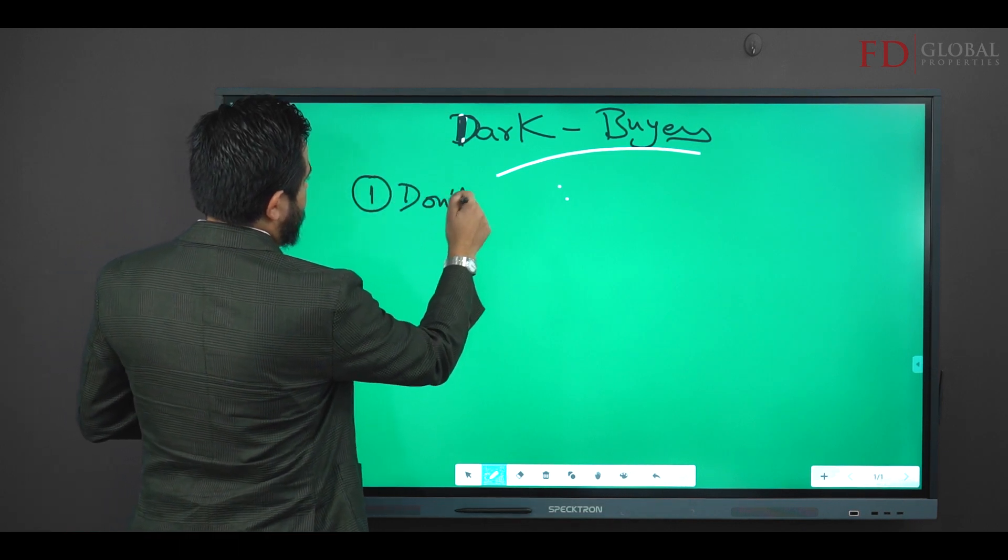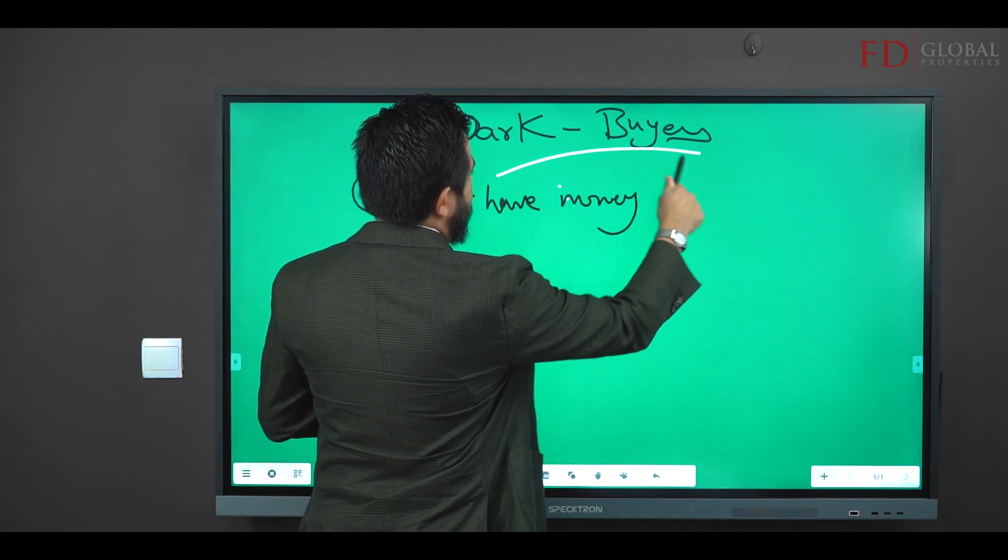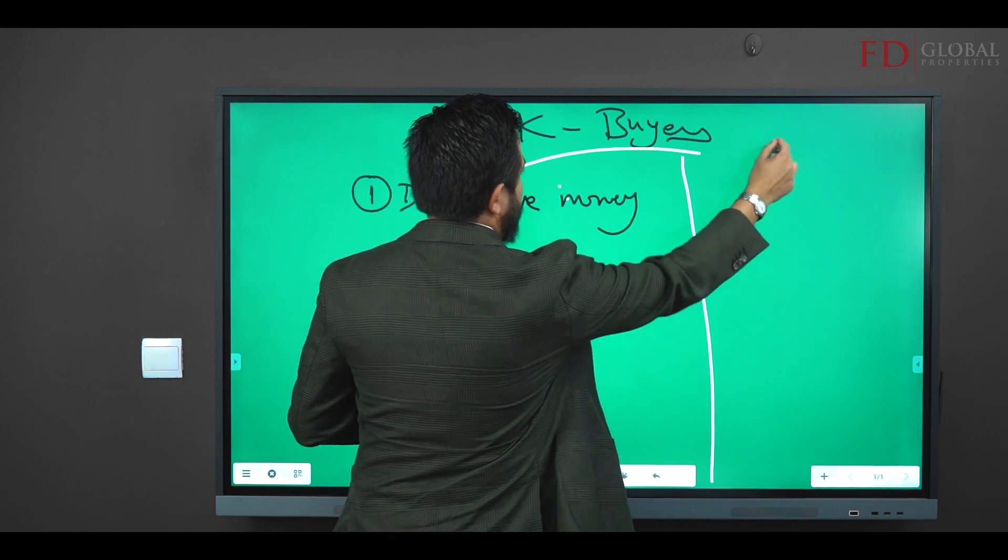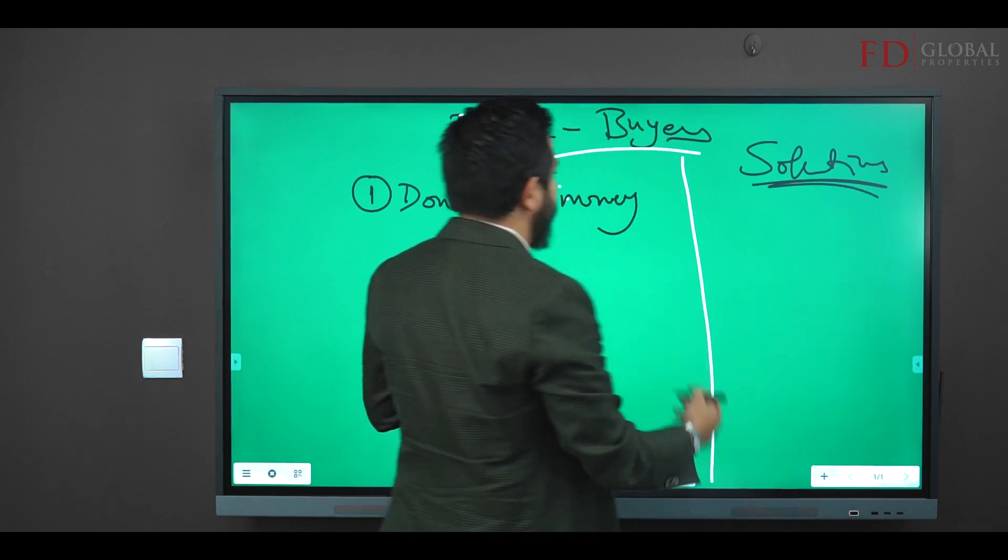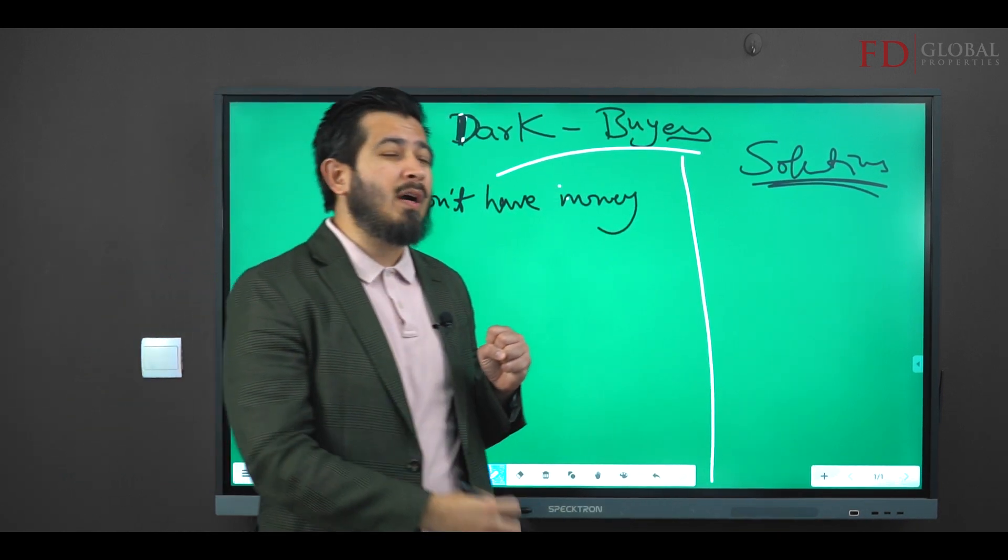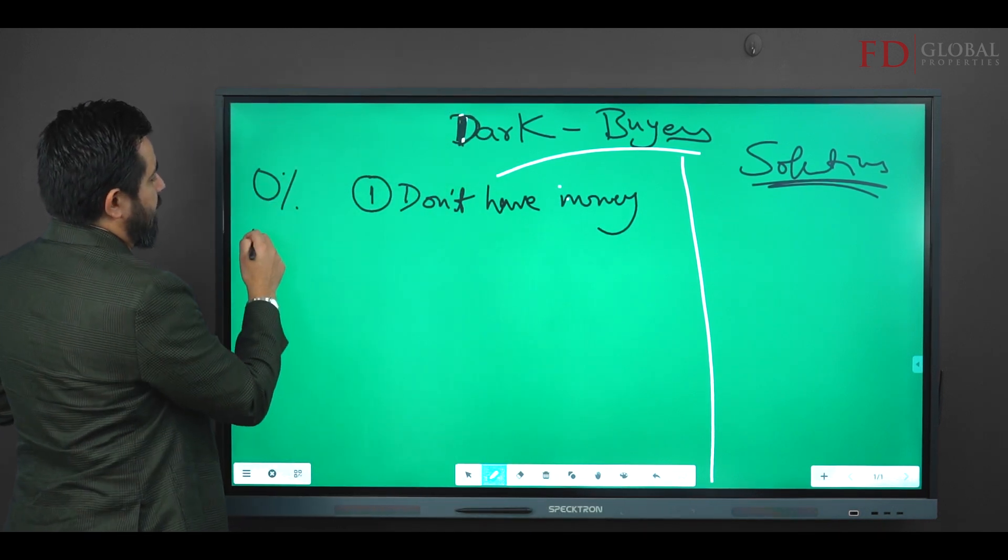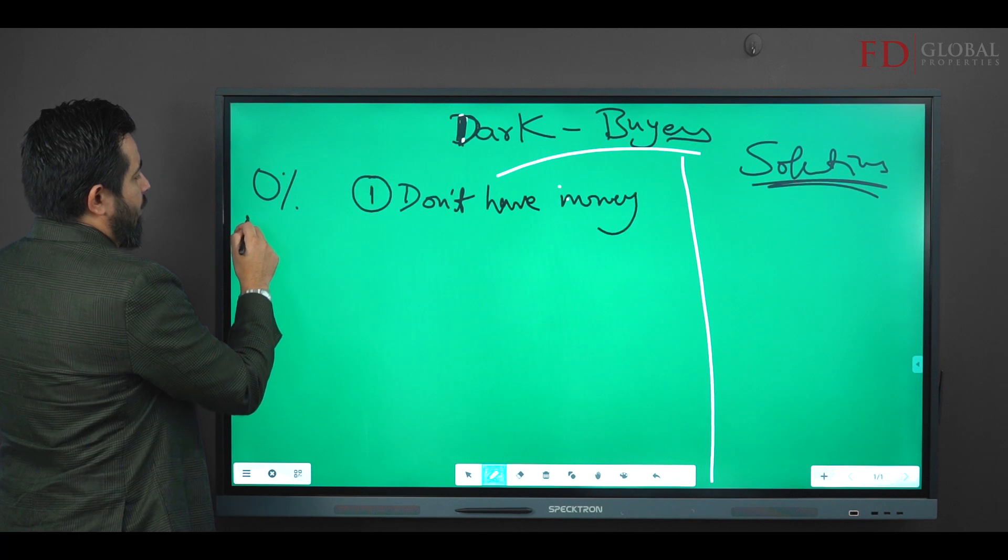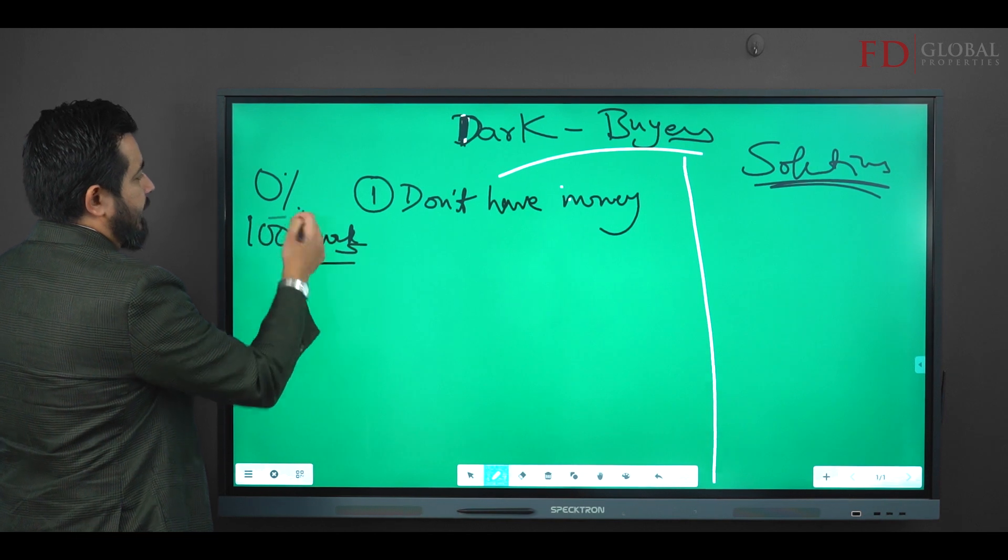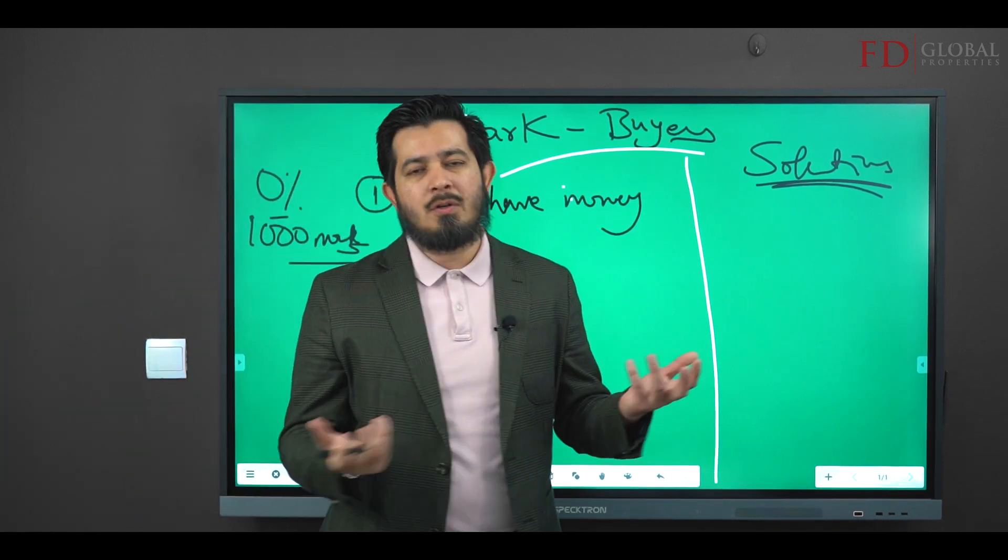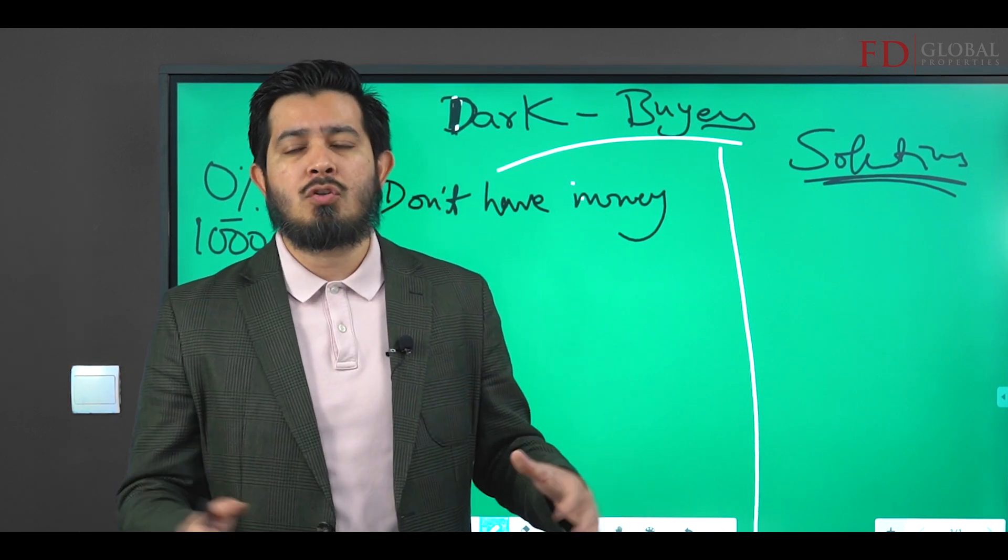The number one thing that you might actually face as a challenge from buyers is they don't have money. This is generally addressed to the younger agents. There might be buyers who are actually out there window shopping. They might look at the wrong advertisements that might tell them it's zero percent down, it's like one thousand months installment plan. They actually come to you.